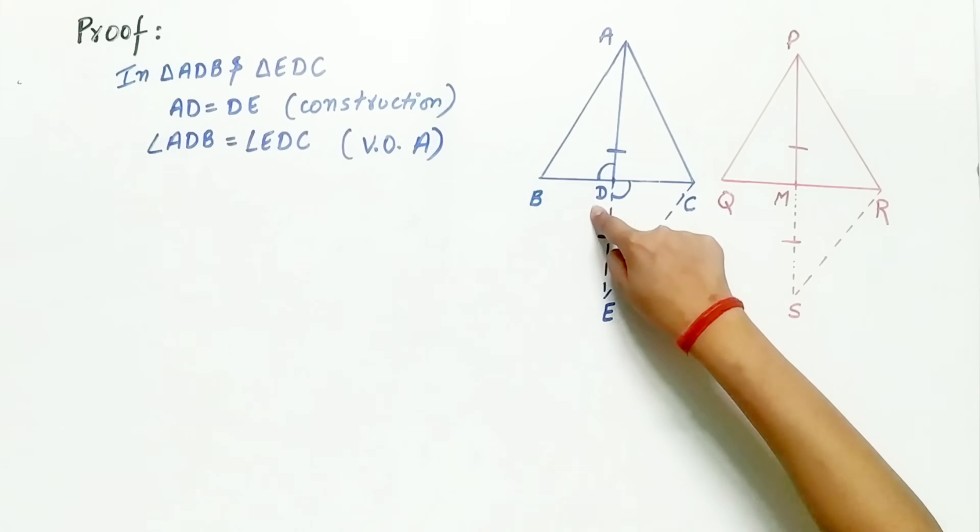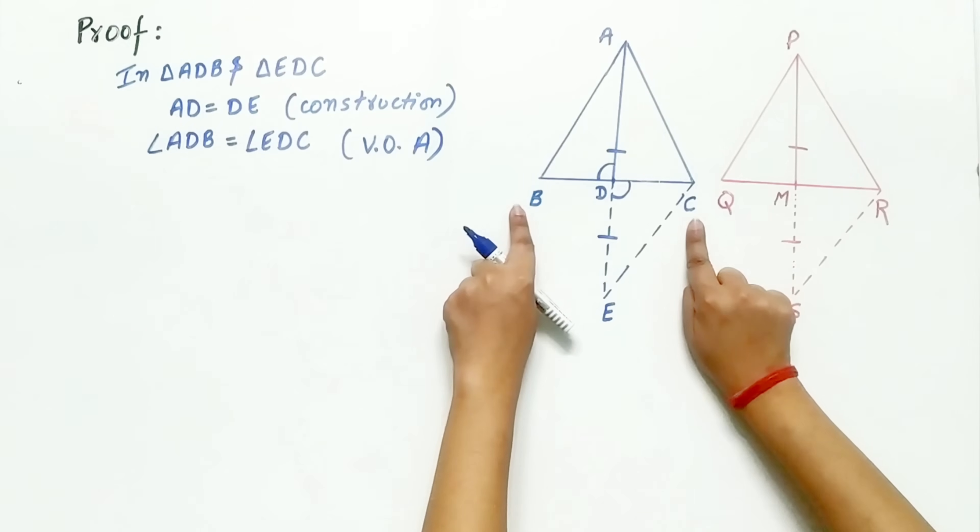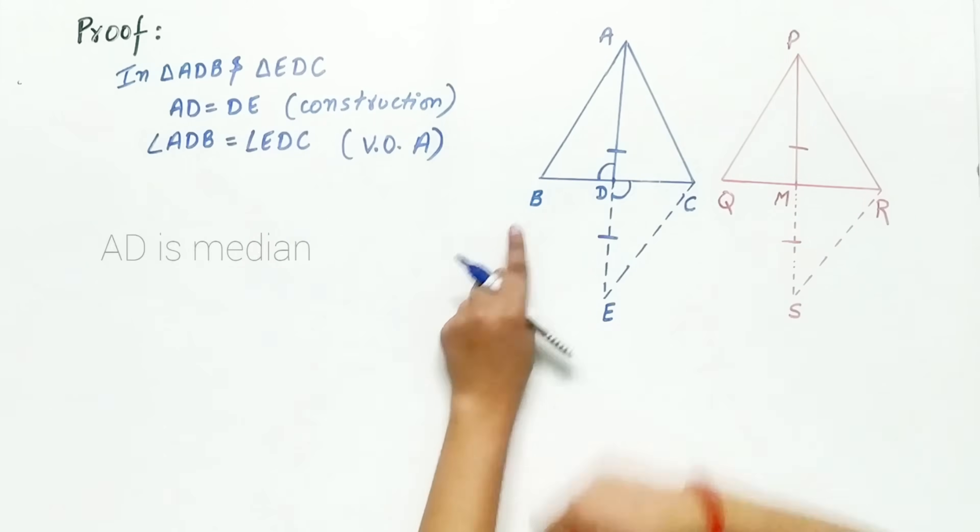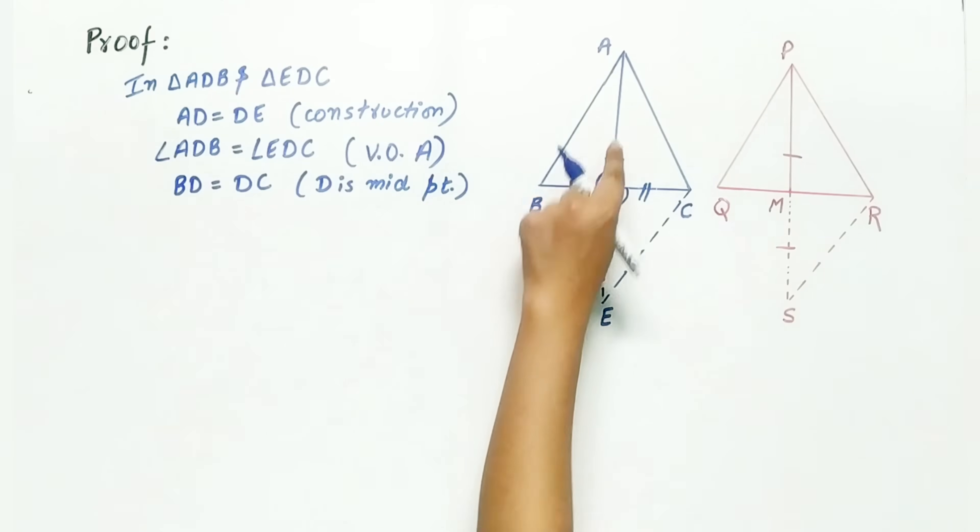Because D is the midpoint of BC or AD is the median of triangle ABC. Hence, by SAS,